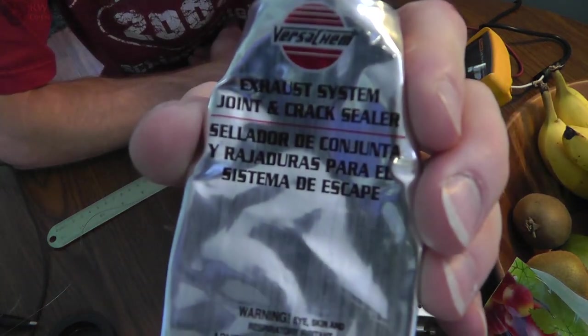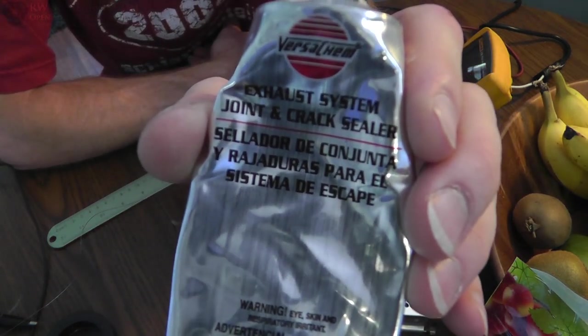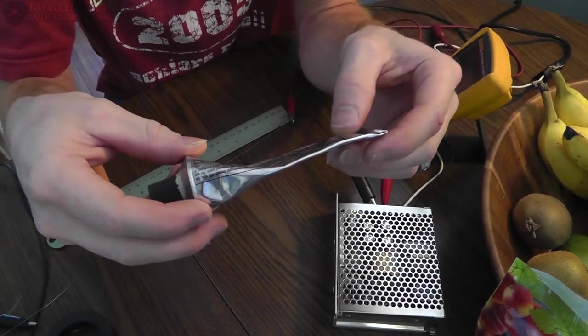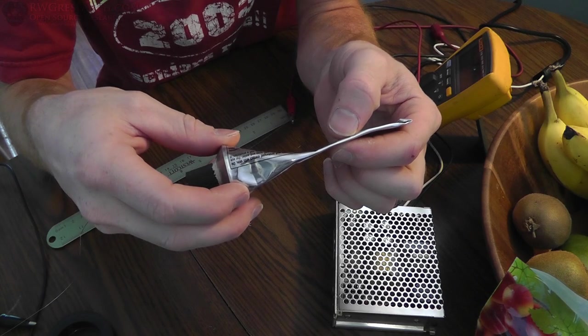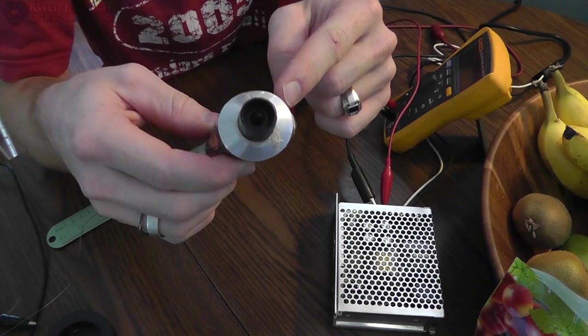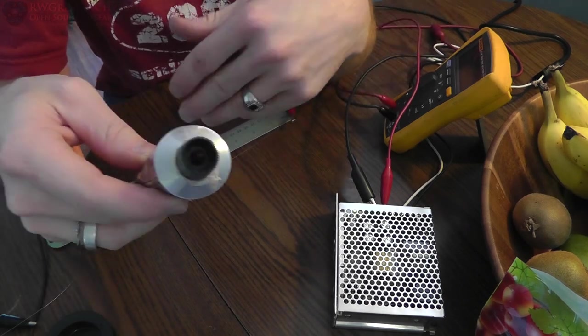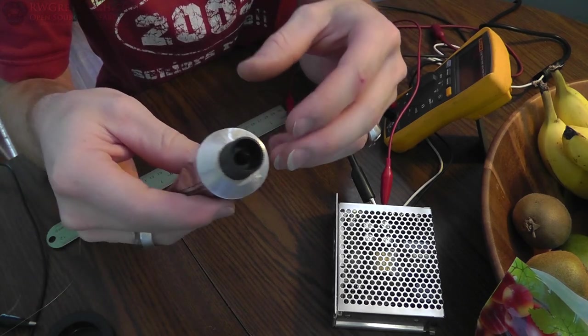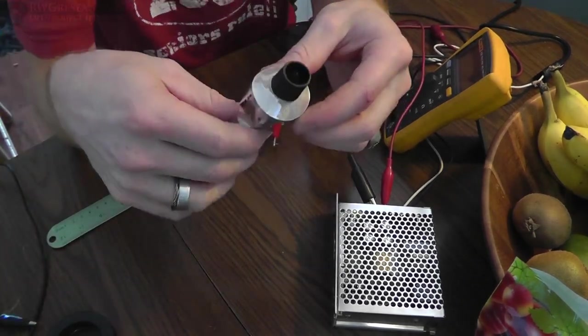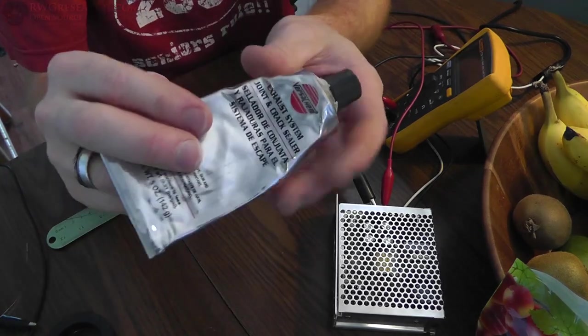So what I'm going to actually be using, besides Kapton tape, is this. This is exhaust crack leak stuff, and it turns really, really, really hard. It's basically sodium silicate, and this will harden. So I'm going to wrap the coil with Kapton tape to keep it insulated, and I'm going to wrap the whole thing in this layer on layer, and however I need to do that, and then this will actually be my protectant.